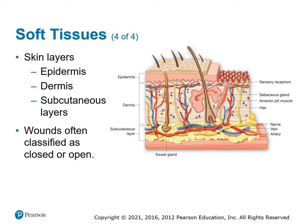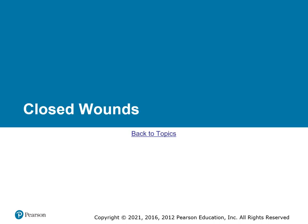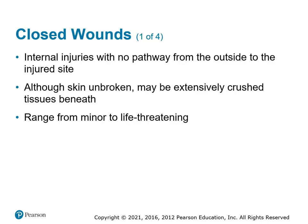Understanding how deep the wound is helps us know what could be impacted by a soft tissue injury. We use basic classifications for wounds: open or closed. Open means there's a break in the skin; closed means there's not.